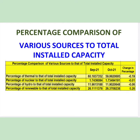Comparing the percentage of various sources to total installed capacity: for thermal there is a small change in the negative side, for nuclear it is also in the negative, for hydro it is minus 0.06%, and for renewables it has increased on the positive side by 0.26%.